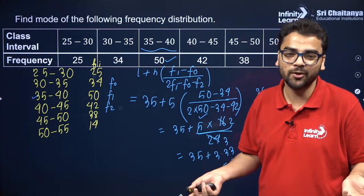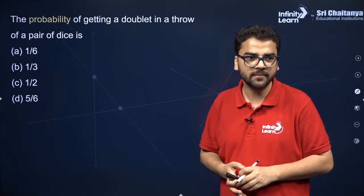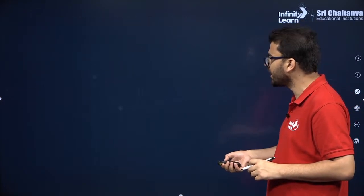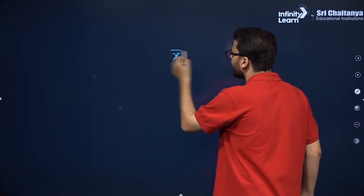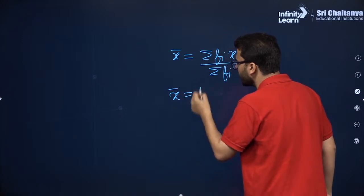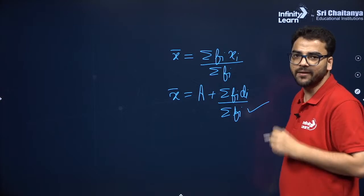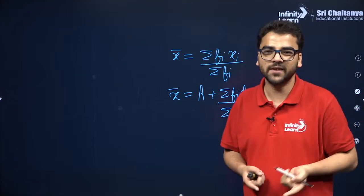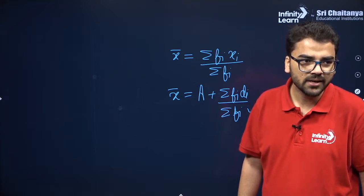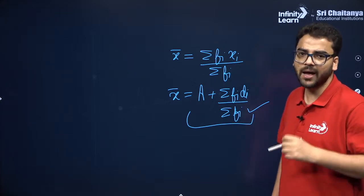The mode of the given data is 38.33. When writing your answer, don't forget to include a statement at the end. For a 5-mark question, label the formula — write what l, h, f0, f1, and f2 are. There are two methods for mean: direct method σf_i x_i / σf_i, and assumed mean method x̄ = a + σf_i d_i / σf_i.